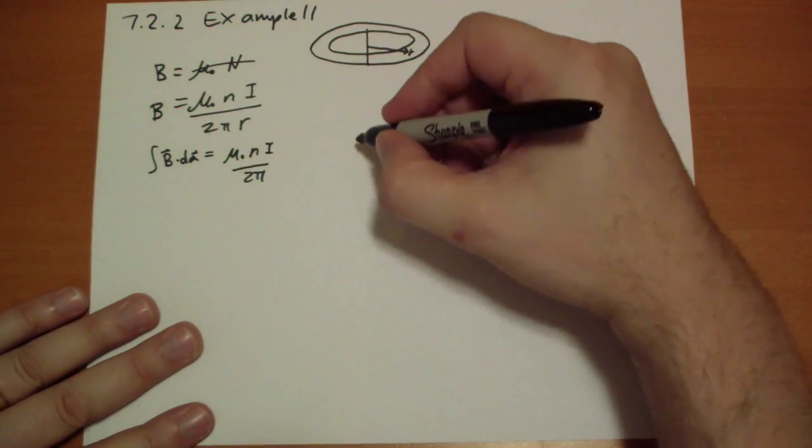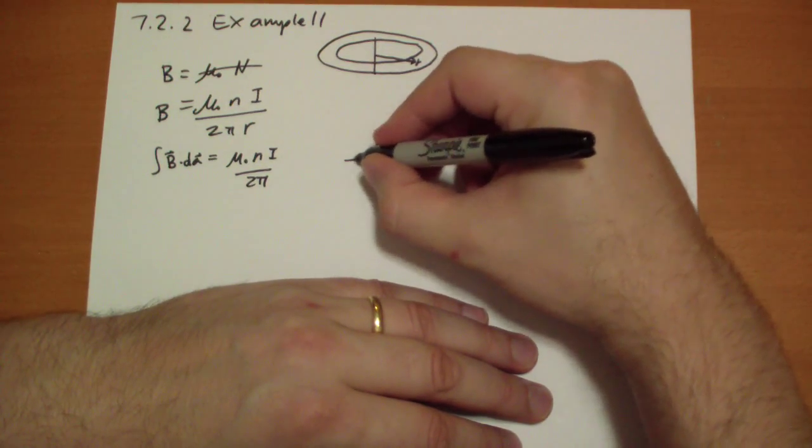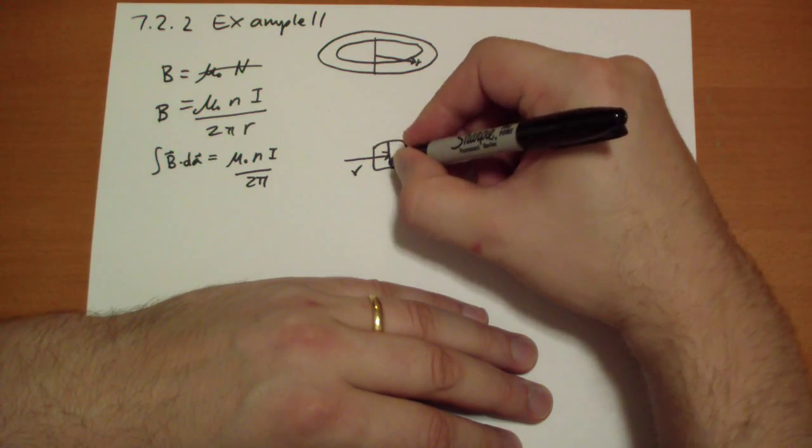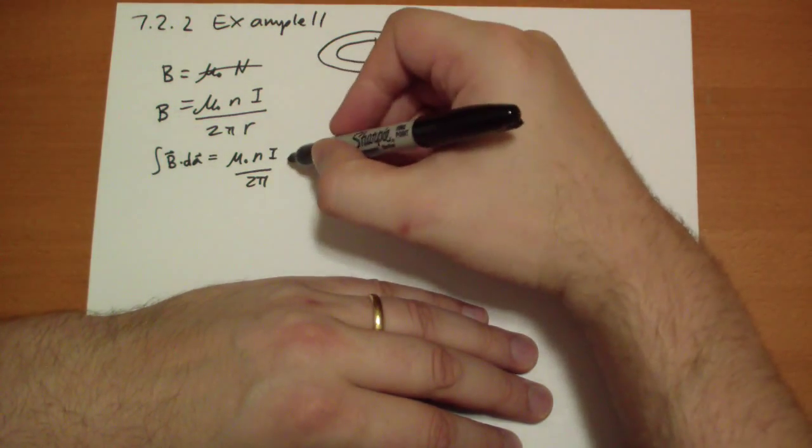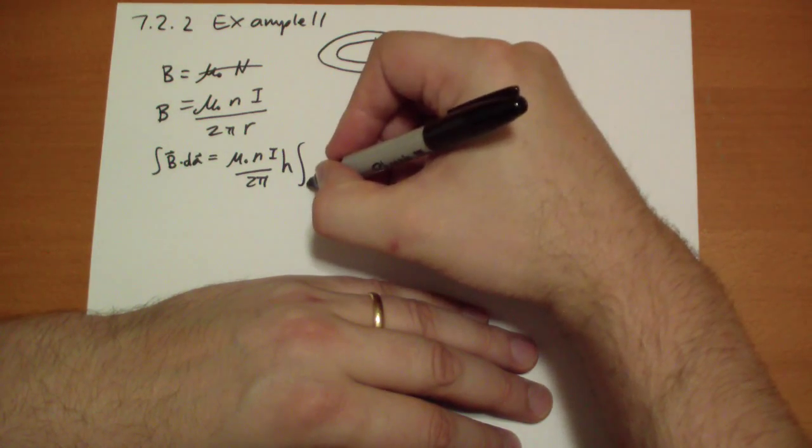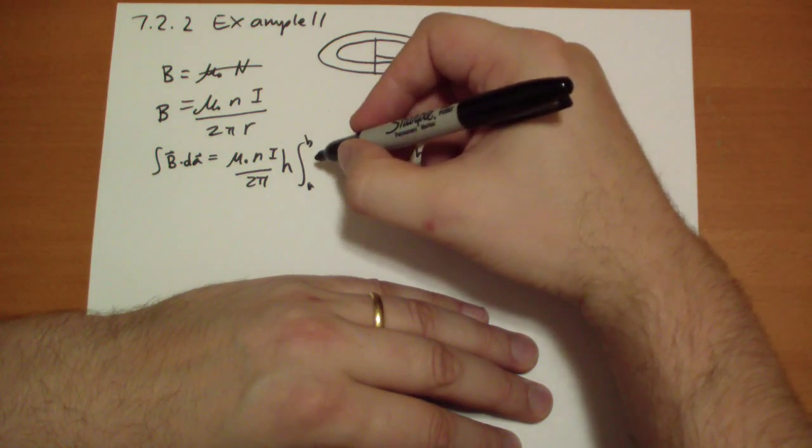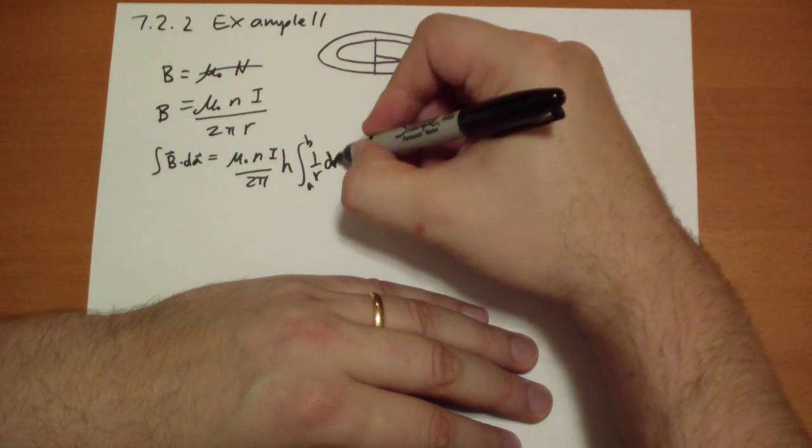And then since the cross-section is rectangular, so we have our r like this. We have a height h. So height h is part of the area there. And the other part of the area that we can't calculate quite easy is the distance from a to b of 1 over r dR.